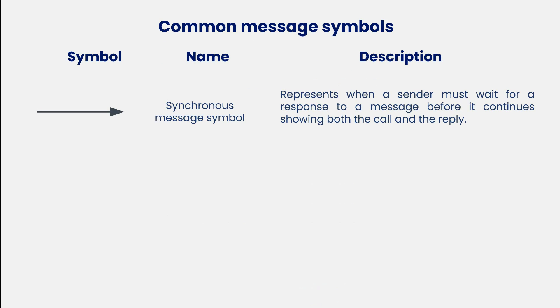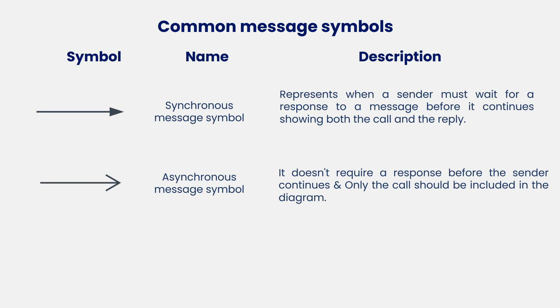To show how information is transmitted between objects, common message symbols are used. A synchronous message symbol represents when a sender must wait for a response to a message before it continues, showing both the call and the reply. An asynchronous message symbol doesn't require a response before the sender continues, and only the call should be included in the diagram.